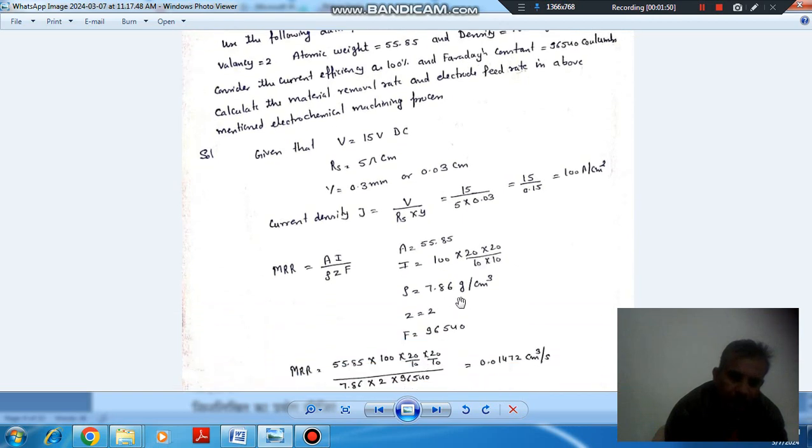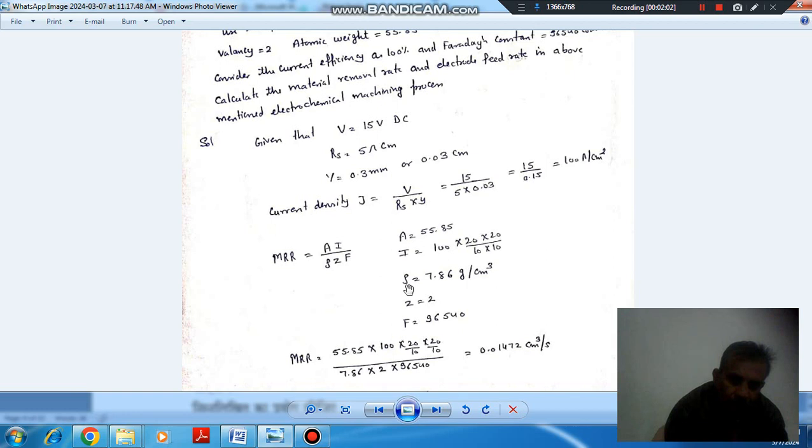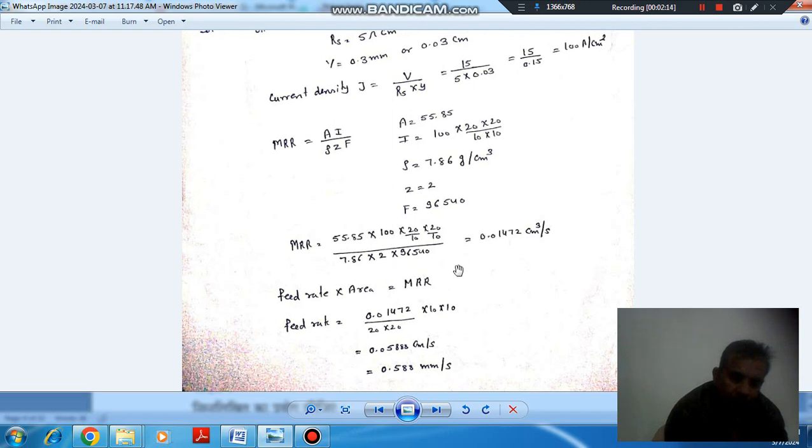Rho is 7860 kg per meter cube. Because here, current density constant is given and that is according to CGS units, we have to convert all these things into CGS. So rho will be here in CGS unit 7.86 gram per centimeter cube. And F is 96540 coulombs. n equals 2 for Fe2+, so valency is 2.